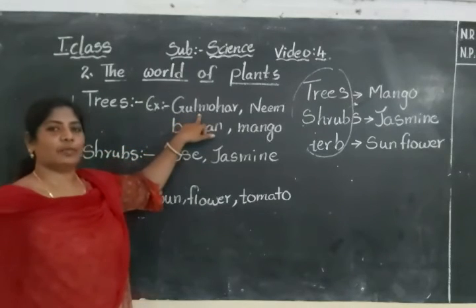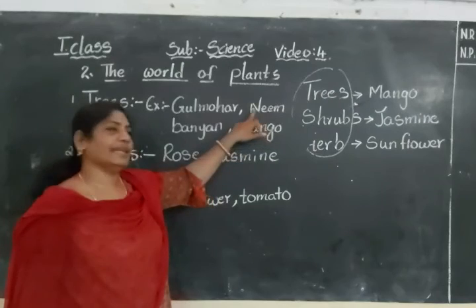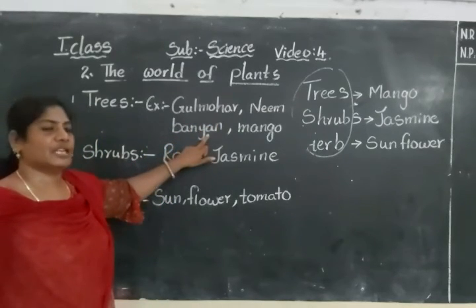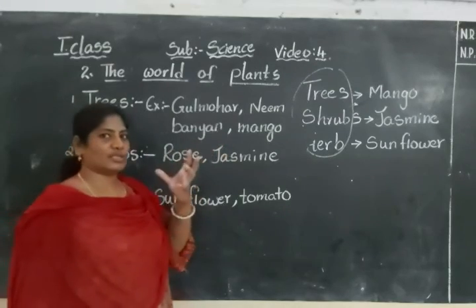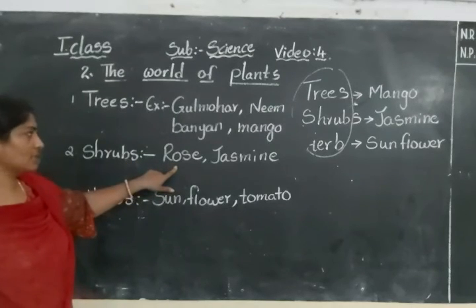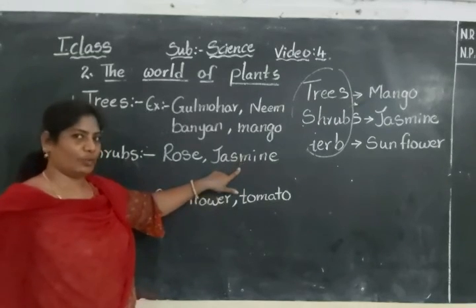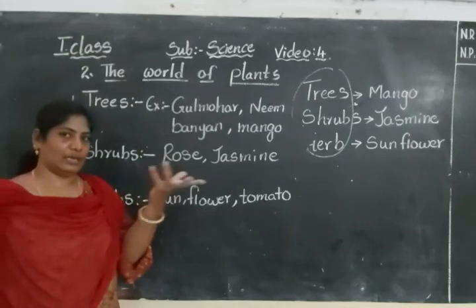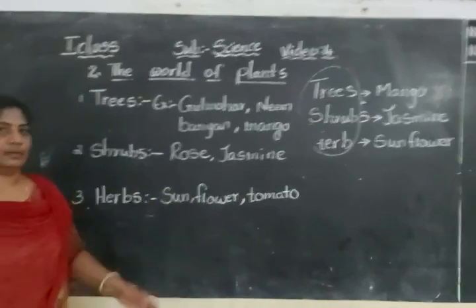Trees: Gulmohar means the red color covering type of tree. Neem tree — you know, it is called Vepachettu. Banyan tree means Marrachettu. Mango tree — this is mango season, so you need mangoes. That is a big tree. Shrubs example: rose — if you are having a rose plant in your house, that is a shrub. Jasmine — Malapur, in summer we get Malapurus. Herbs: sunflower — you know sunflower oil. Tomato is used in curries. Okay, bye bye.